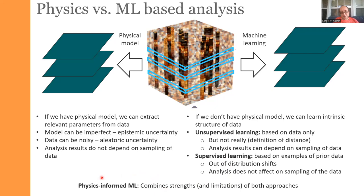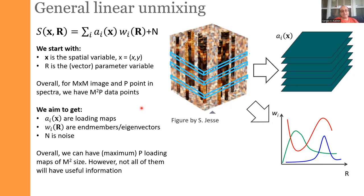There are also more complex strategies such as physics-informed machine learning, which combines the strengths — and sometimes the limitations — of both approaches. I'll show one example of how it is done. The simplest example of linear analysis starts with your three-dimensional data set, which you represent as a linear combination of loading maps times their components.